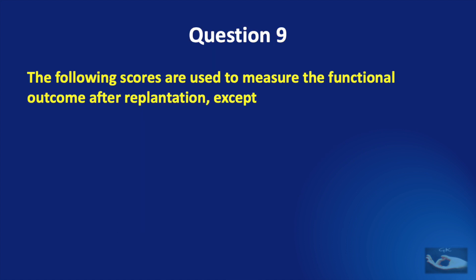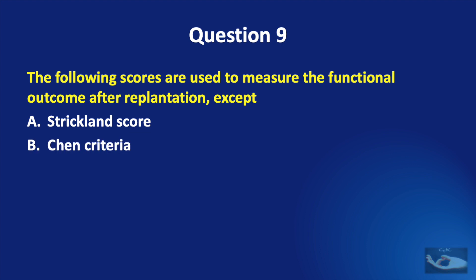Question number 9. The following scores are used to measure functional outcome after replantation, except: the Strickland score, the Chen criteria, the Tamai score, or the DASH score?